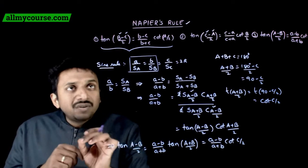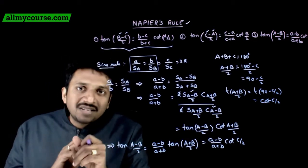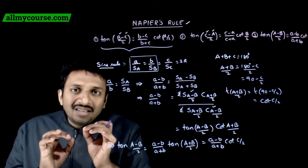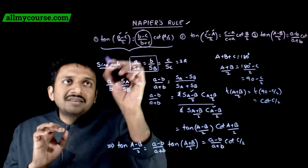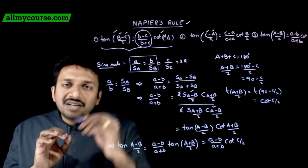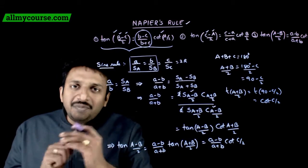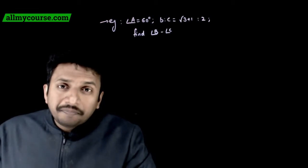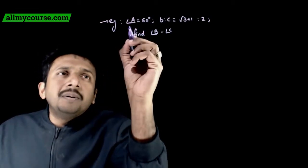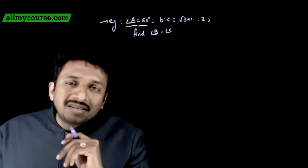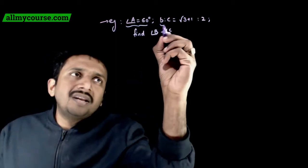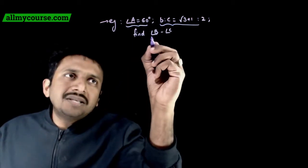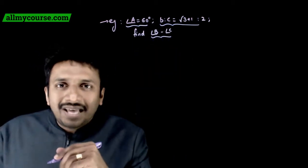Napier's rule is used in questions involving tan((B minus C)/2) or cot(A/2). If the question contains terms like these, we usually apply Napier's rule. For example: given angle A equals 60 degrees and the ratio b to c equals (root 3 plus 1) to 2, find angle B minus angle C.